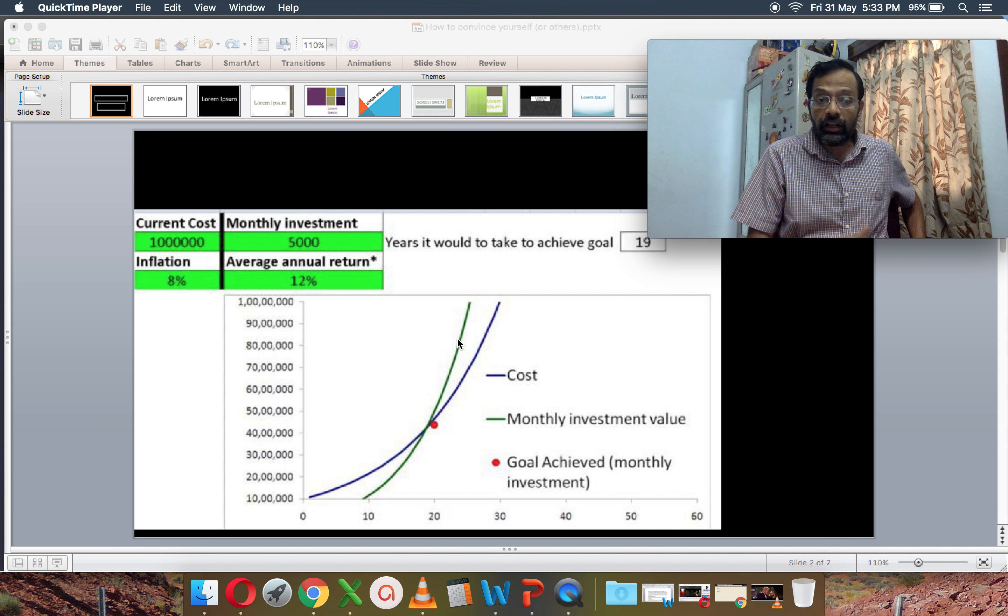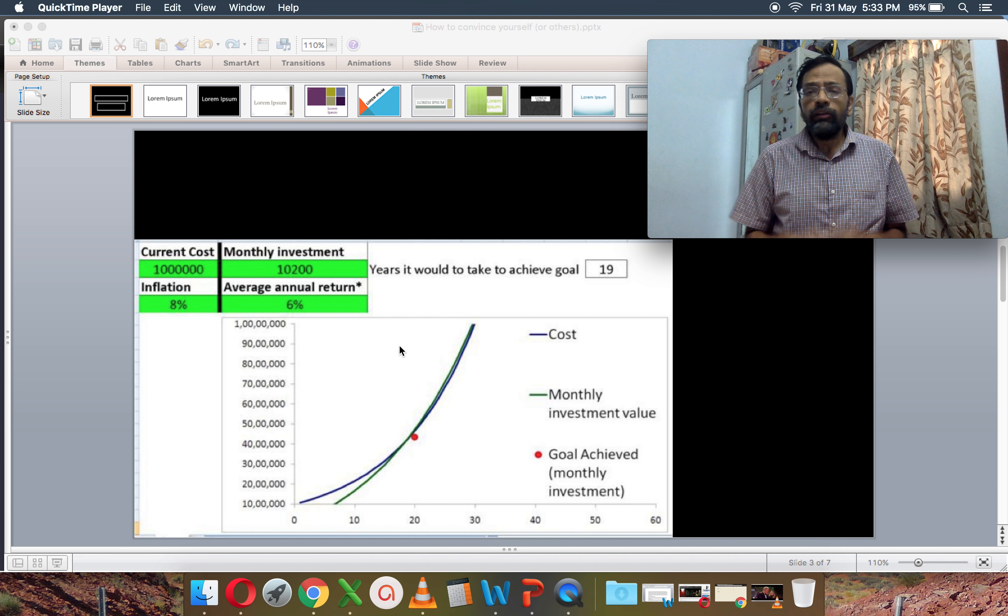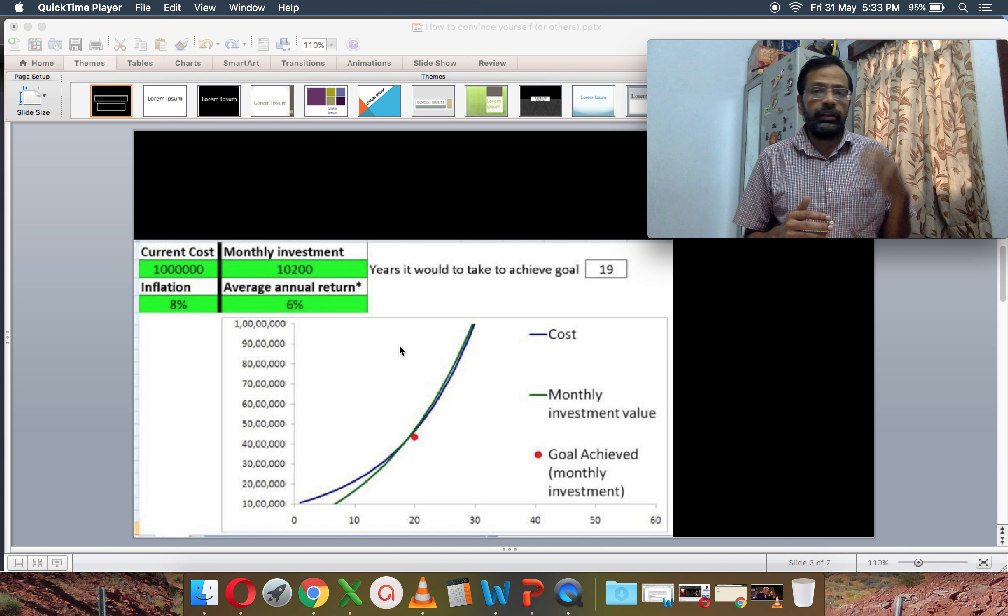So in the previous example, you needed to invest only 5,000 to achieve the goal in 19 years. But if you reduce the return, you need to invest more to be able to achieve the goal in the same duration.